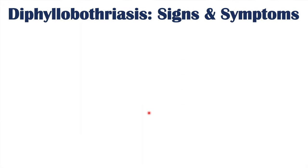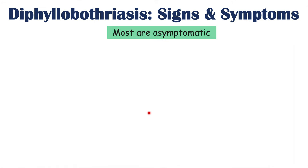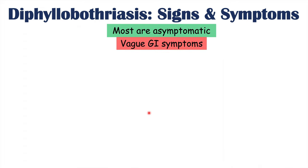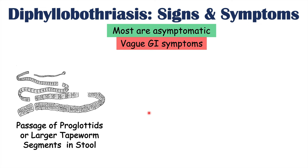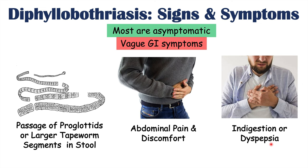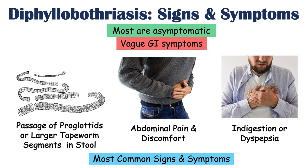Most patients infected with a Diphyllobothrial species are actually asymptomatic. If symptoms do occur, they are often vague gastrointestinal symptoms. More specific to tapeworm infection is the passage of proglottids or larger tapeworm segments in the stool, which can look like small pieces of rice or white or yellow specks. Other symptoms include abdominal pain and discomfort, as well as indigestion or dyspepsia — a gnawing sensation in the epigastric area. These are the most common signs and symptoms of diphyllobothriasis.